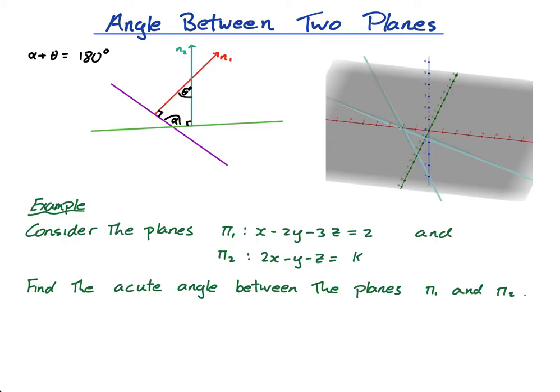So if alpha plus theta equals 180, and alpha plus this angle has to equal 180 because it's a straight line, this angle here has to be theta. And guess what, this angle here is the angle between the two planes, so the angle between the two normals is the same as the angle between the two planes, so it's actually quite a nice easy way to do it. I want you to understand why that is the case, and it's to do with this diagram here.